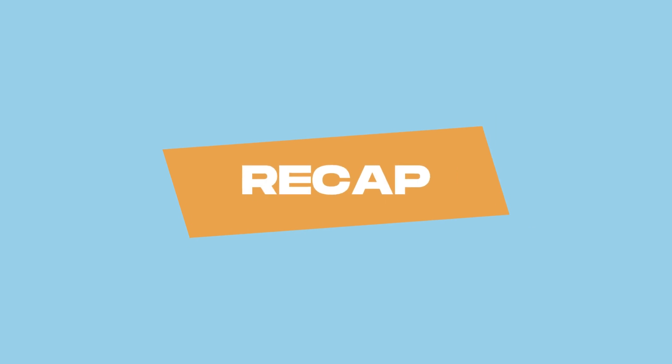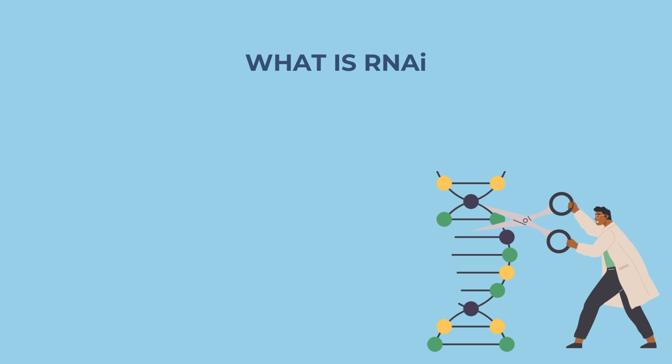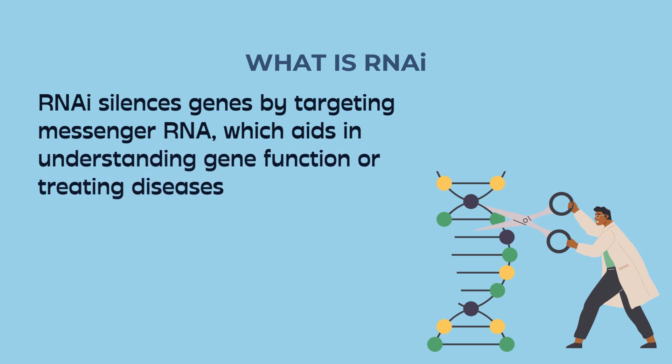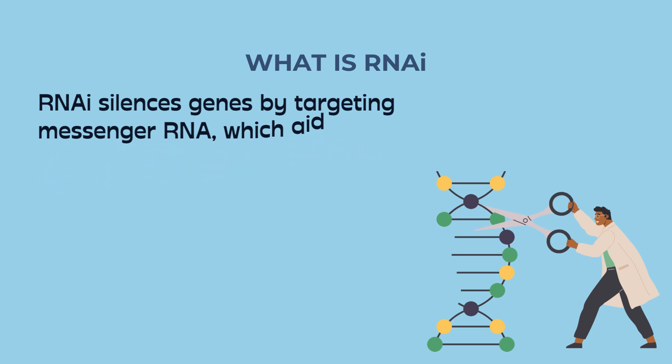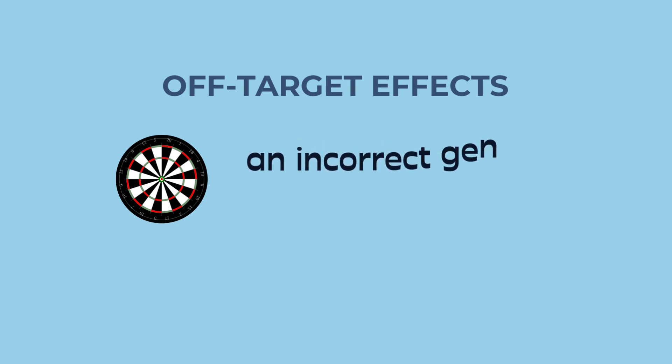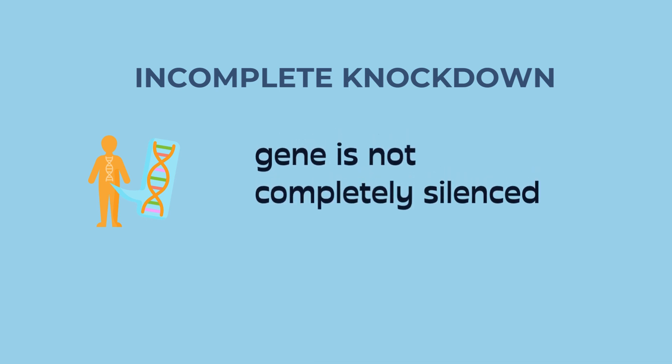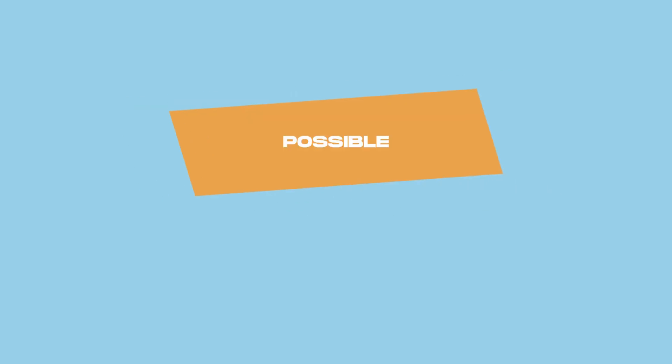So, just to recap what we talked about. RNA interference is a technique where RNA molecules, such as siRNA and miRNA, can silence genes by targeting messenger RNA, which aids in understanding gene function or treating diseases. Sometimes problems can occur, such as off-target effects, which is when an incorrect gene is targeted, or incomplete knockdown, which results in a still functional gene due to non-effective silencing.